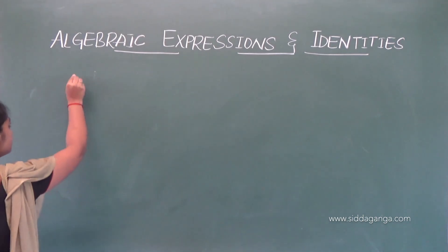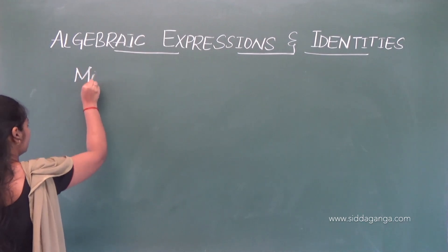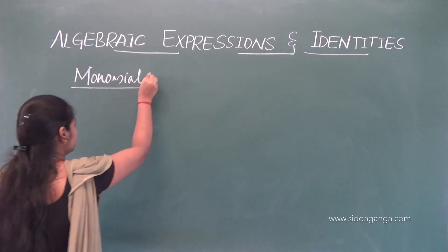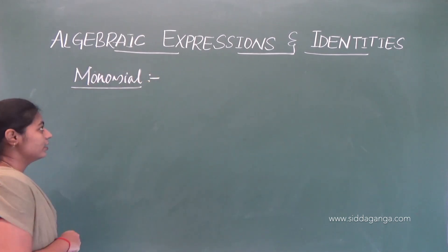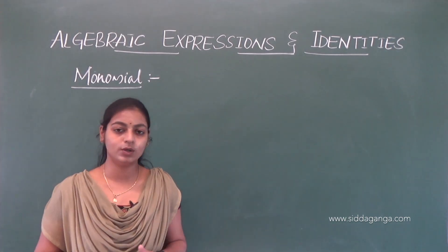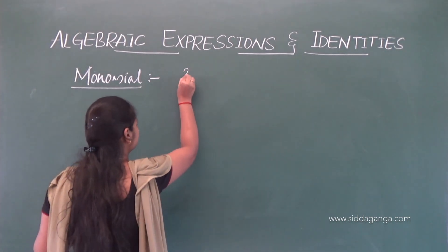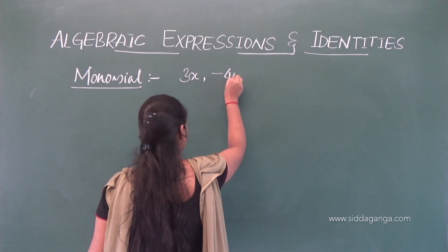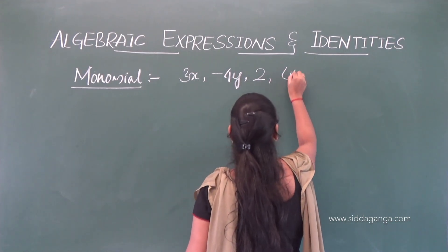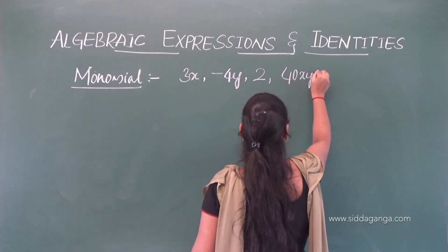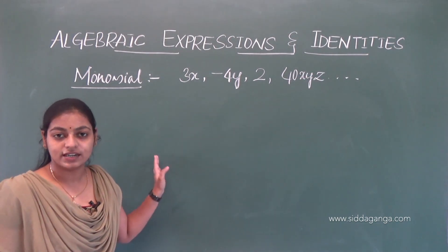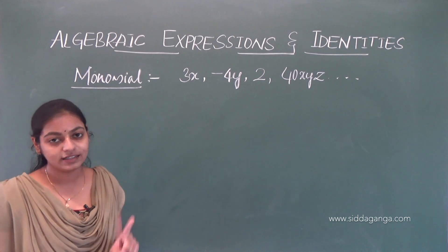The next concept is monomial. If an algebraic expression contains only one term, then we call it as monomial. For example, 3x, minus 4y, 2, 40x, y, z and so on — any algebraic expression containing only one term is a monomial.